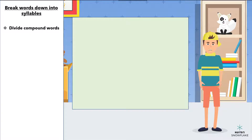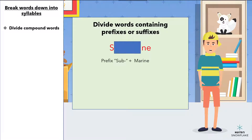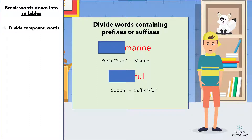Words that contain prefixes and suffixes contain lots of clues. Break them down into their prefix or suffix and the rest of the word. For example, 'submarine' consists of the prefix 'sub,' which means under, and the word 'marine,' which means something that is of the sea. So, submarine means something that is under the sea. 'Spoonful' consists of the word 'spoon' and the suffix 'ful,' which means as much as the word before will hold. So, spoonful is the quantity that a spoon will hold.